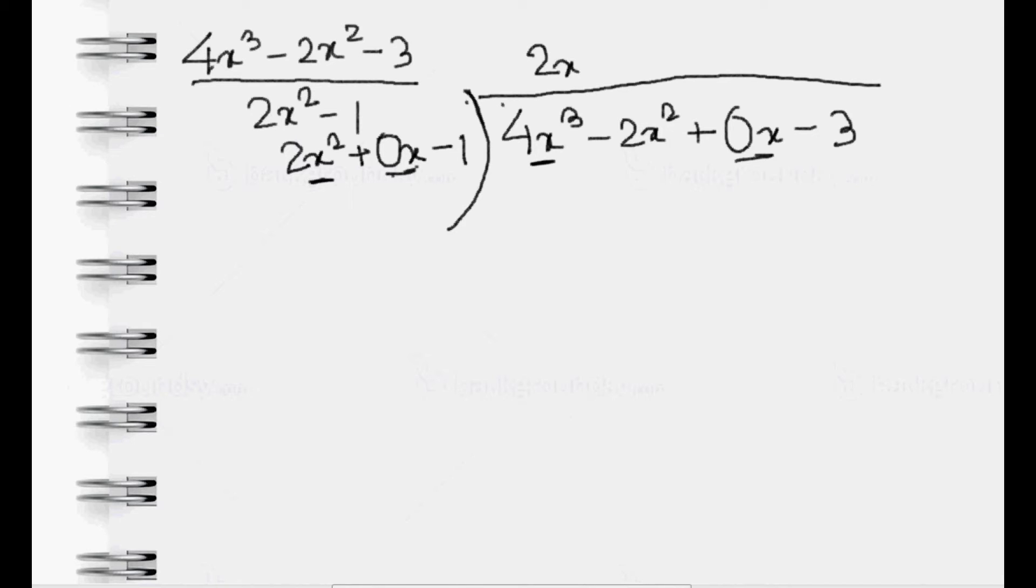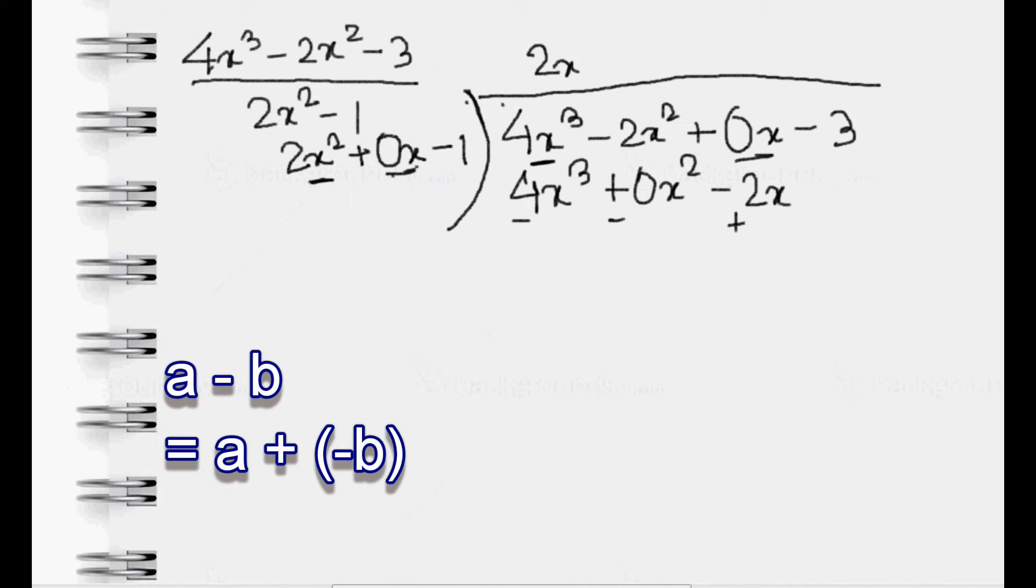If we multiply 2x with 2x², it would be 4x³. Now we have to multiply 2x with the rest of the divisor. 2x into 0x is equal to 0x². 2x into -1 is equal to -2x.